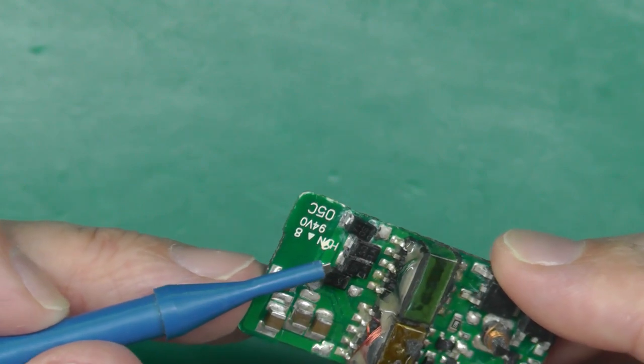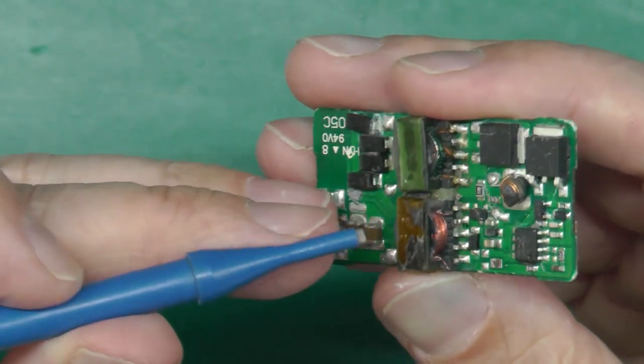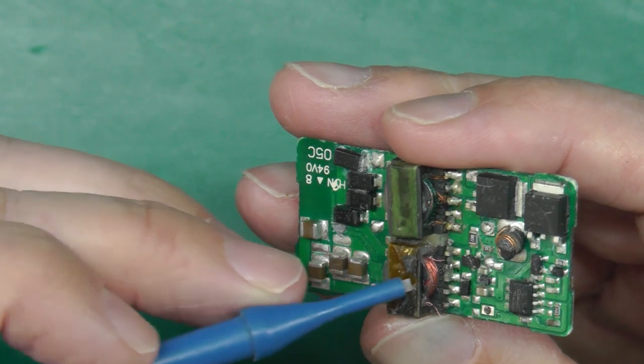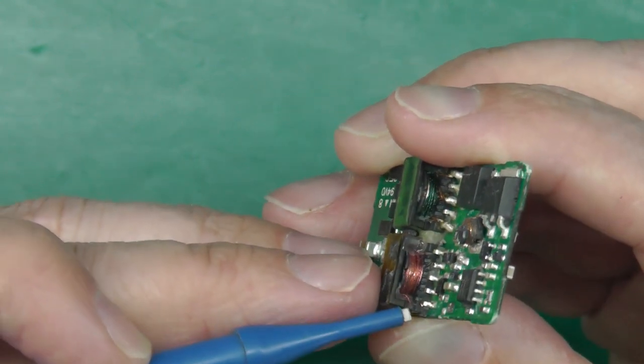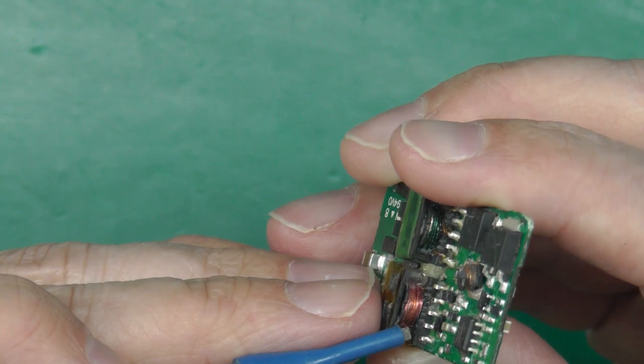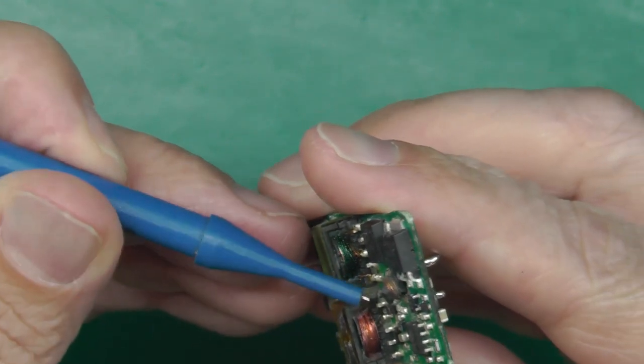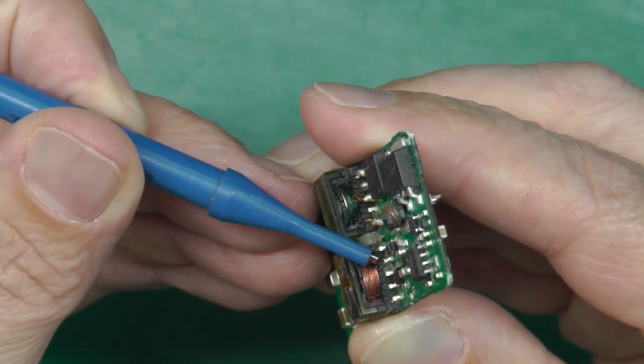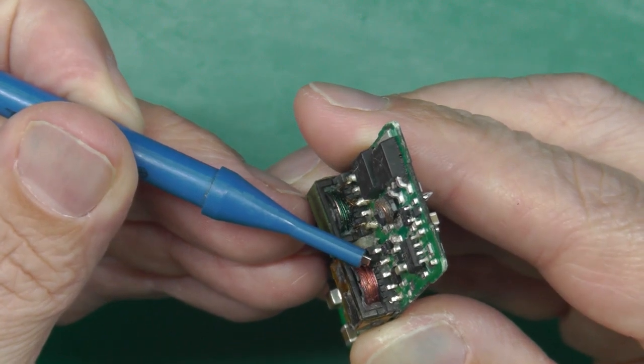Probably the worst problem I've got is this coil here. I've managed to snap one of the outer windings there, but very luckily I can see both ends.